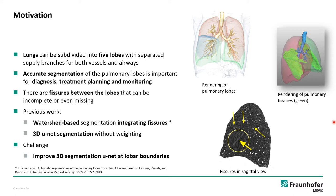Human lungs can be subdivided into 5 lobes. There are 2 lobes on the left side and 3 lobes on the right side. The lobes have separated supply branches for vessels and airways. On a CT you can see bright lines between the lobes called fissures. If you see the fissure you can see the lobar boundaries. But fissures can be incomplete or sometimes completely missing.